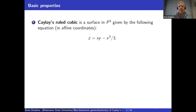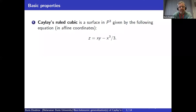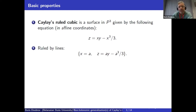Cayley's ruled cubic is a surface in P3 — a two-dimensional surface in three-dimensional projective space. This is an equation in affine coordinates, a very simple one. Apart from the minus x cubed over three term, it's just the equation of a quadratic surface — quadratic in P3. So it is ruled by lines, which is why it's called a ruled cubic. These are equations of all these lines: we just take x to be a constant and get a family of lines.